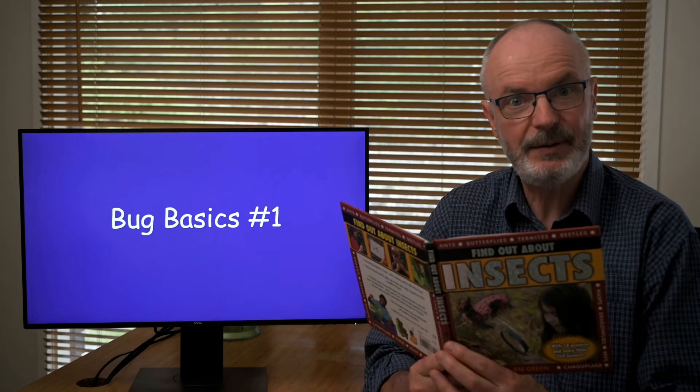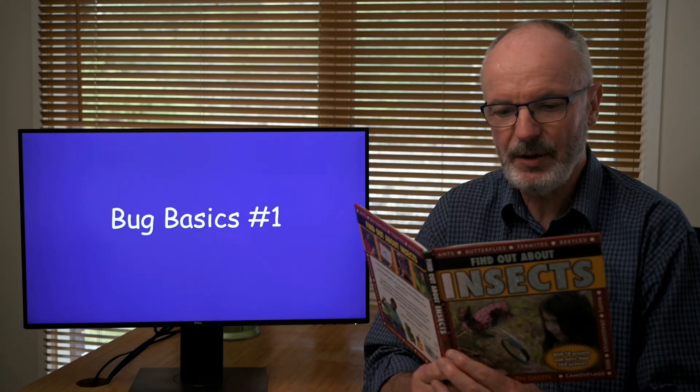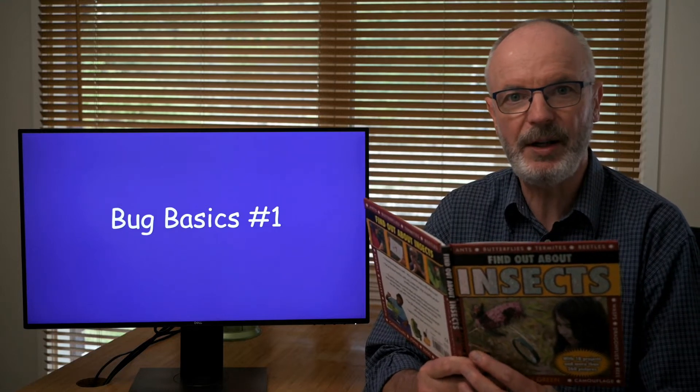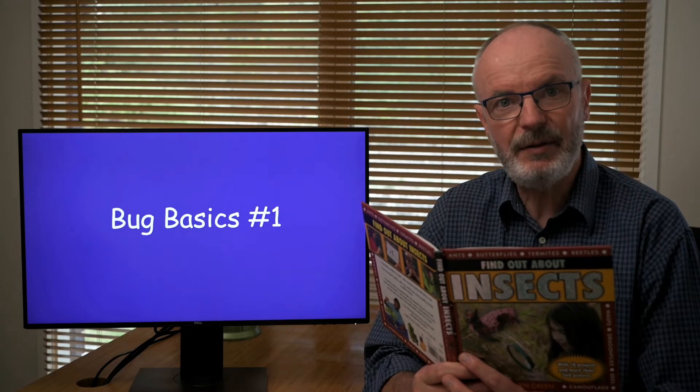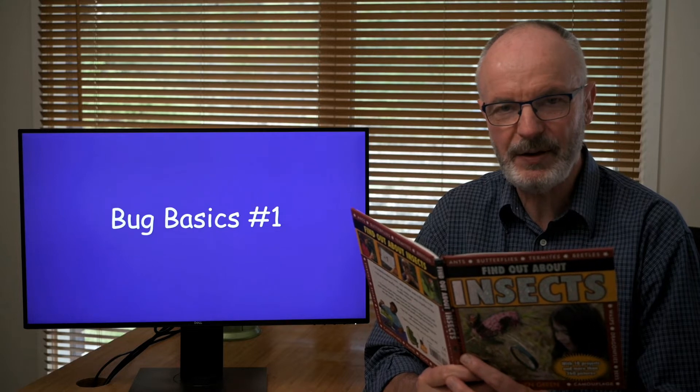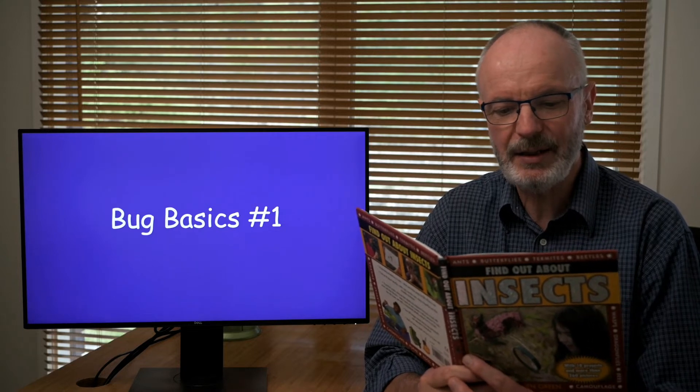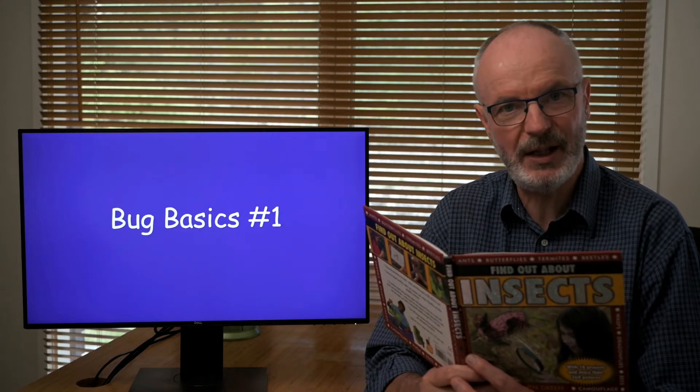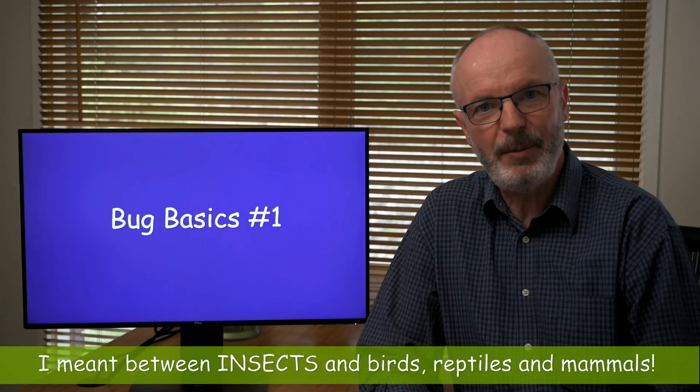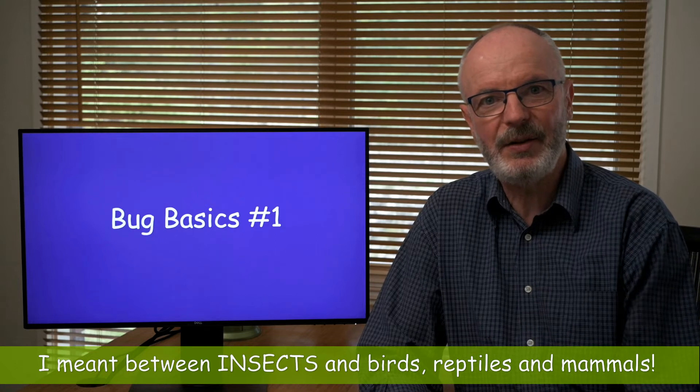What is an insect? Birds, reptiles, and mammals all have internal skeletons to provide a framework for their bodies. Insects are different. They have their skeletons on the outside. Their soft body parts are protected by a hard case called an exoskeleton. But all the arthropods have exoskeletons. So how do we tell the difference between all of them?